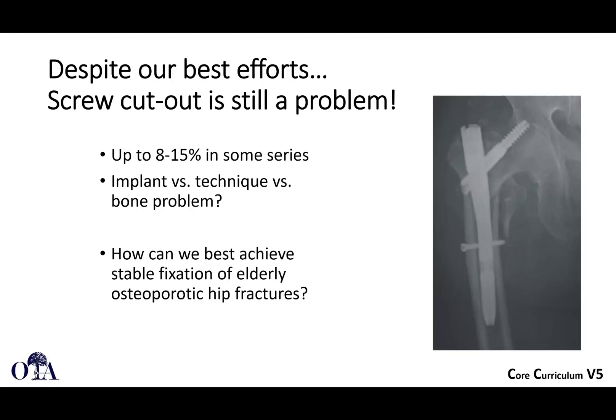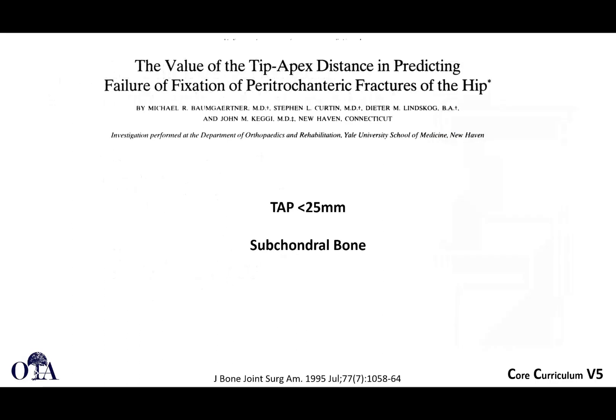Screw cutout remains a problem despite best efforts, occurring in up to 15% of some series. To minimize it, reduce your tip-apex distance. Baumgaertner's landmark 1995 JBJS study established that the combined tip-apex distance — tip of screw to center of femoral head on both AP and lateral views added together — should be less than 25 mm to significantly reduce cutout risk.